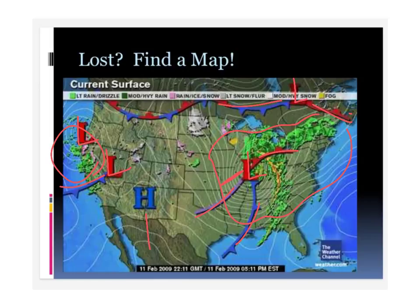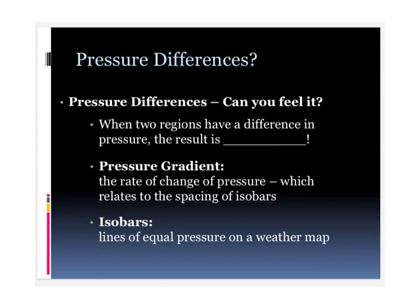Sometimes people can actually feel when the pressure is falling — their bones ache. My granny used to say, 'I can tell when a storm's coming because I can feel it in my bones.' Some people can actually feel those pressure changes in the atmosphere. Remember, if we have two places of different pressure — one with high pressure and one with low pressure — pressure flows from high to low, and that results in wind. We are going to be talking about winds tomorrow on Thursday.